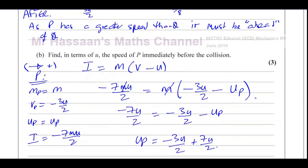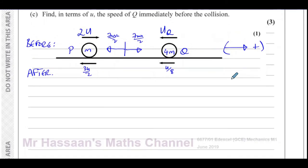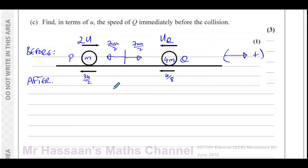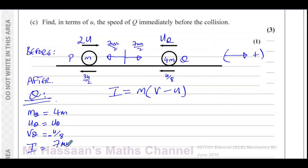Now moving on to part C: find, in terms of U, the speed of Q immediately before the collision. We have a choice — we could use conservation of momentum or the impulse. I think using the impulse will be easier. Considering Q: the mass of Q is 4M, the final speed of Q is negative U over 8 in the positive direction we've defined. The impulse on Q acts in the positive direction — it's 7MU over 2.